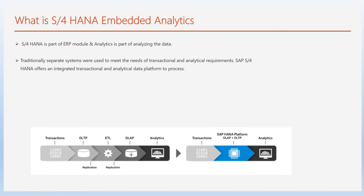As shown in the picture below, traditionally separate systems were used to meet the needs of transactional and analytic requirements. But in S4HANA, it offers an integrated transactional and analytic data platform. On the left-hand side, we have the transactional data — OLTP data transfers into OLAP data — and then a separate analytics platform analyzes the data. But in S4HANA, SAP HANA is used as the database, so OLAP and OLTP can be stored in one area, and analytics is integrated as part of the whole module. That is why we call it SAP HANA Embedded Analytics.